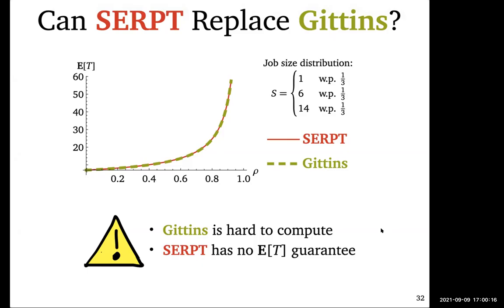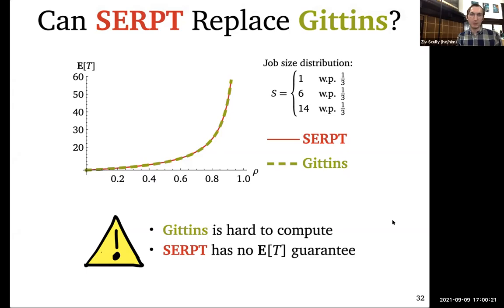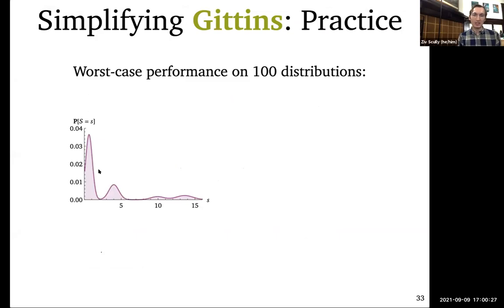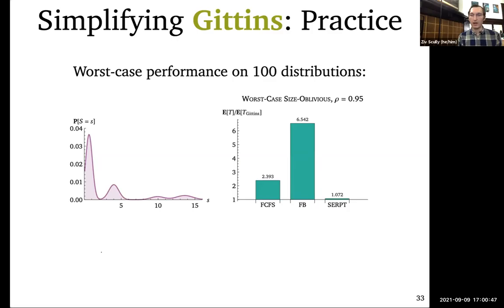In practice, we generated a hundred different distributions — mixtures of Gaussians with various weights — and compared first-come-first-serve, foreground-background, SERPT, and a couple of other policies against Gittins. Here's a worst-case comparison out of these 100 trials.